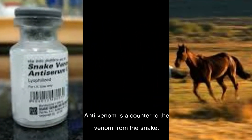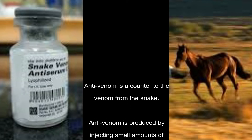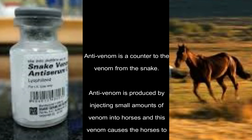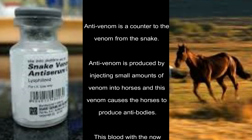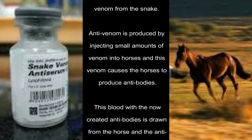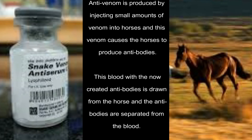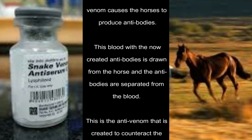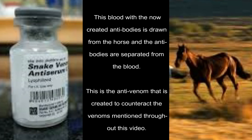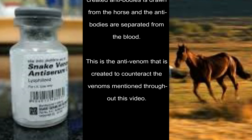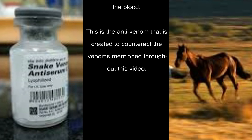Anti-venom is a counter to the venom from the snake. Anti-venom is produced by injecting small amounts of venom into horses, causing the horses to produce antibodies. This blood, with the newly created antibodies, is drawn from the horse and the antibodies are separated from the blood. This is the anti-venom that is created to counteract the venoms mentioned throughout this video.